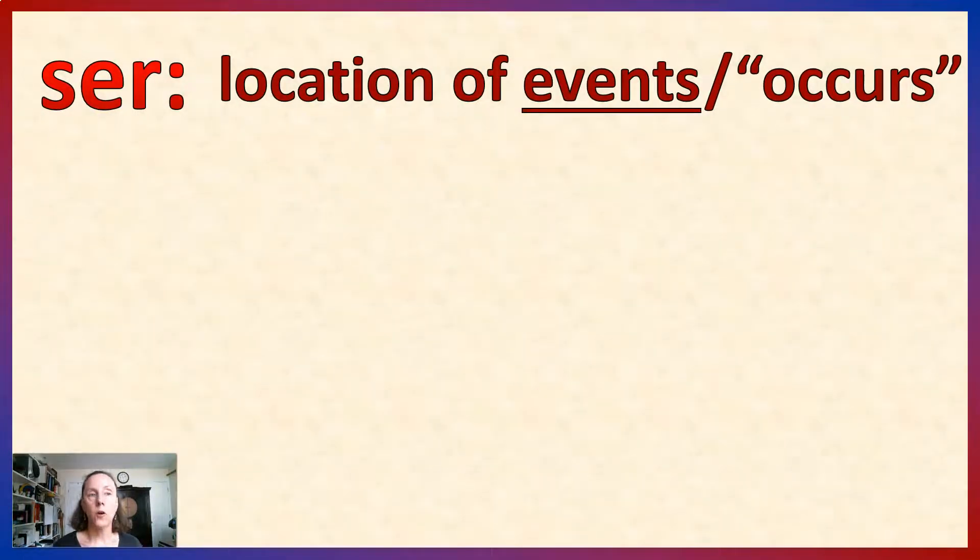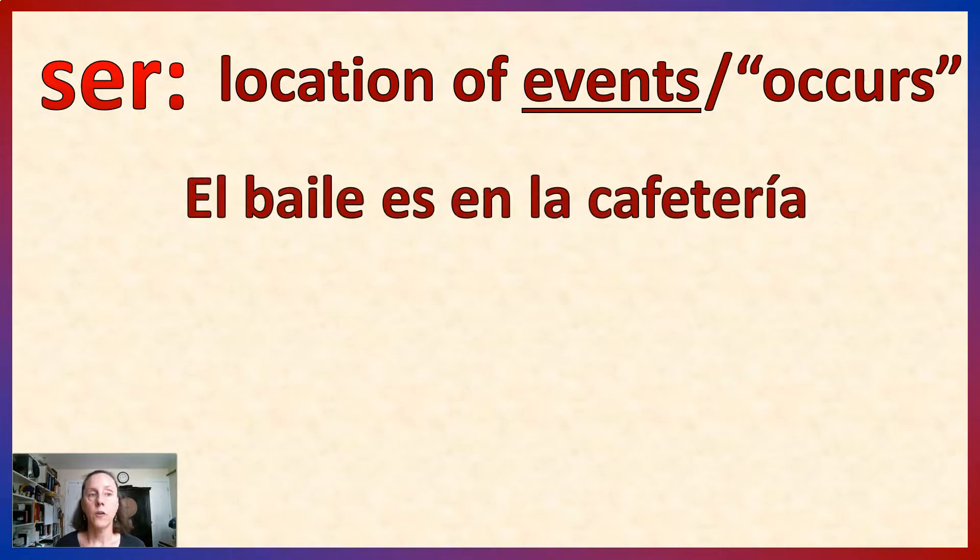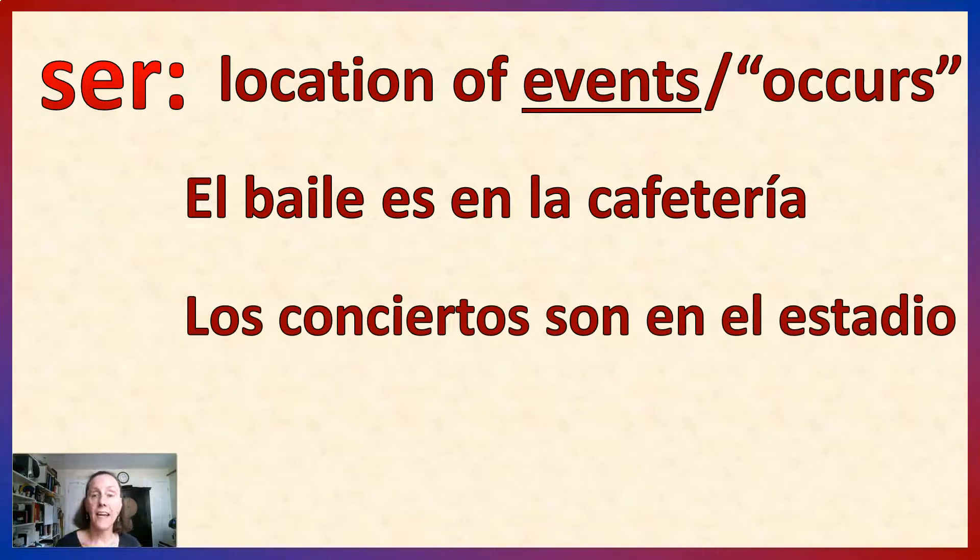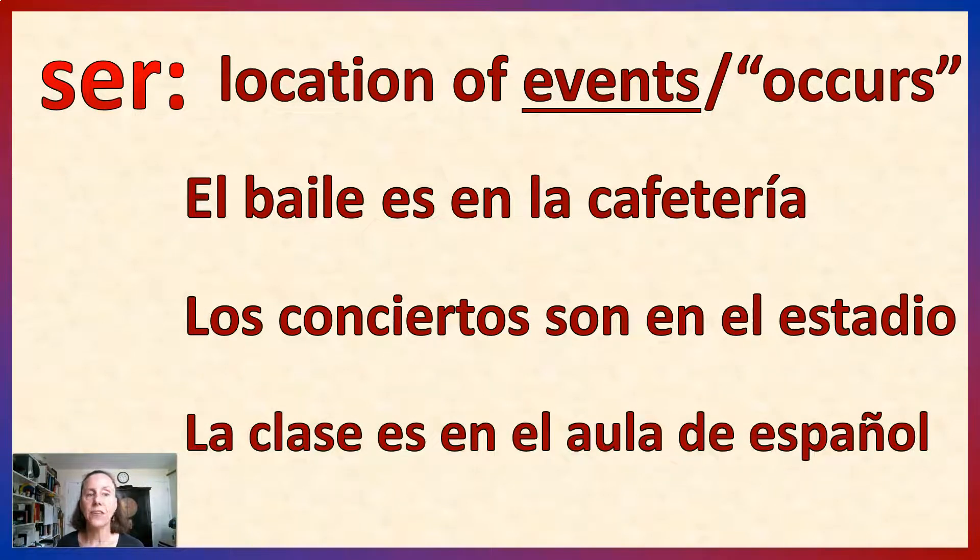Location of events. So, el baile. El baile es en la cafetería. This is an event. This is not a thing. Los conciertos son en el estadio. Or, la clase es en el aula de español. We're talking of events. And events, we're going to be using ser.